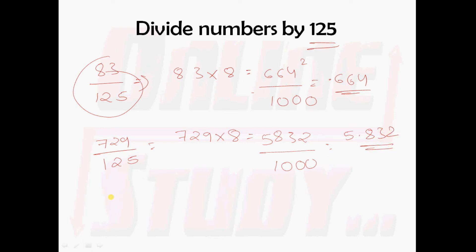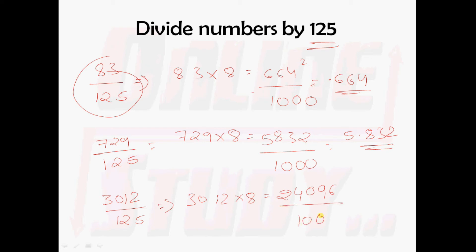We shall take one more example: 3012 divided by 125. Just multiply 3012 with 8. You will get 24096. And this 24096 should be divided by 1000, so you will get 24.096. That is, 3012 divided by 125 is 24.096.